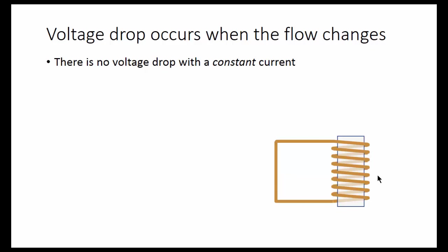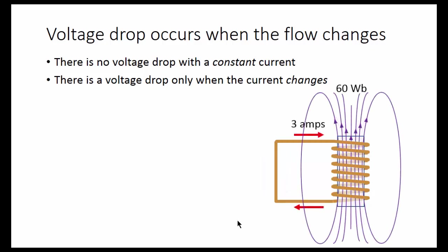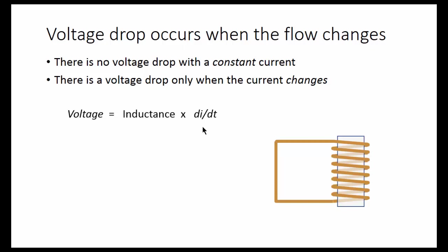Now let's look at the electronic inductor. There's no voltage drop with a constant current. There is a voltage drop only when the current changes. For example, let's insert a battery in this circuit. Now we have 3 amps flowing with a zero voltage drop — a constant 3 amps and a constant 60 Webers. This is like the momentum of a flywheel keeping the flow constant. The flux equals inductance times current, so the change in flux with time equals inductance times the change in current with time. The change in flux per unit time is the voltage applied, which you could deduce from Maxwell's equations. The notation di/dt means the change in current with the change in time.